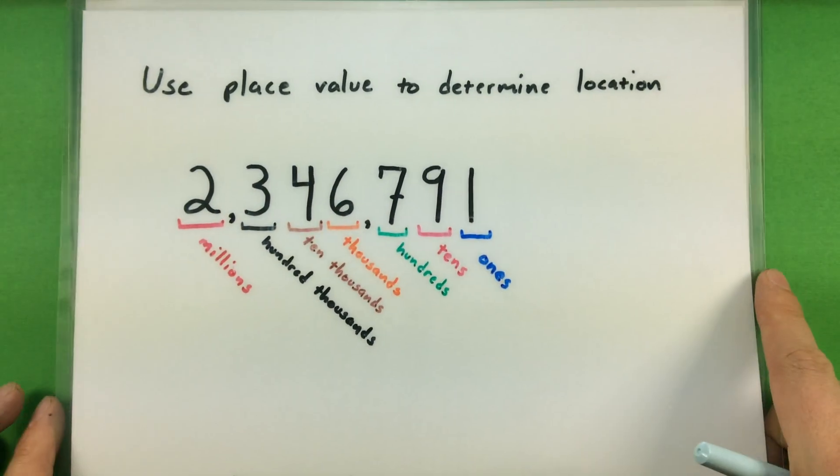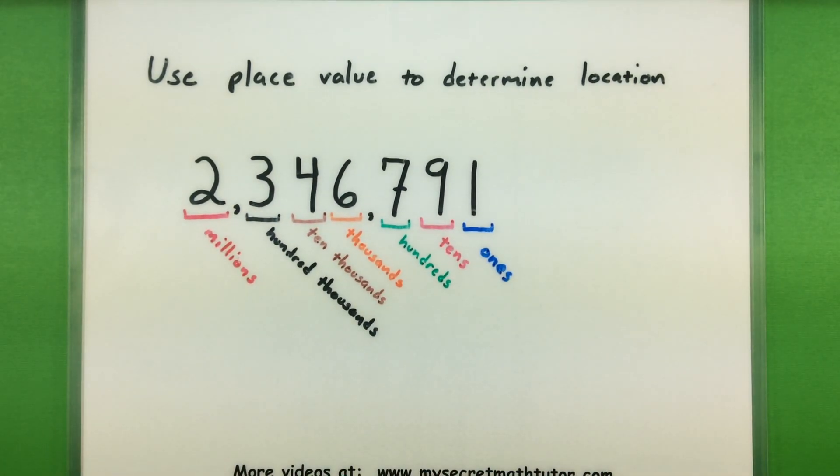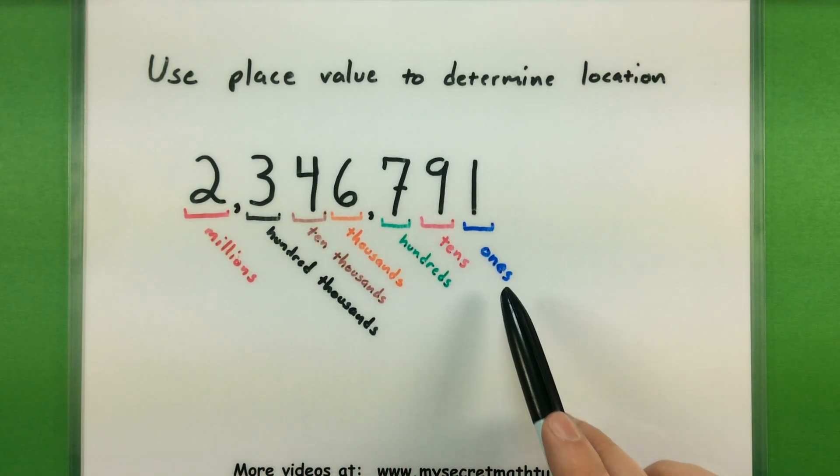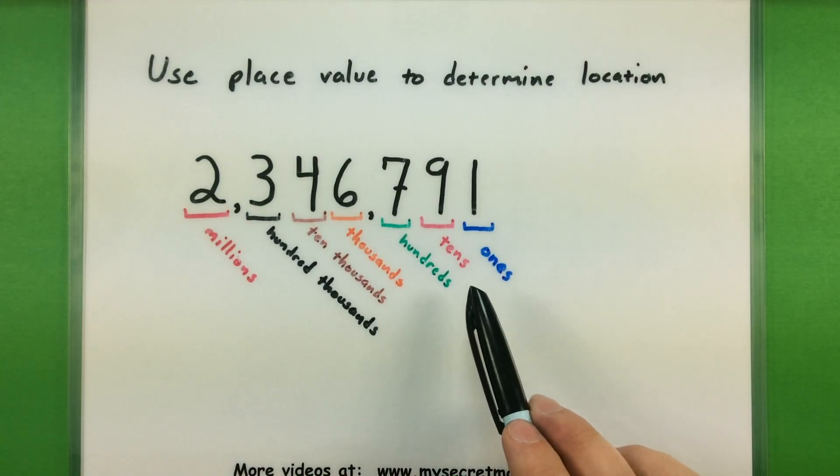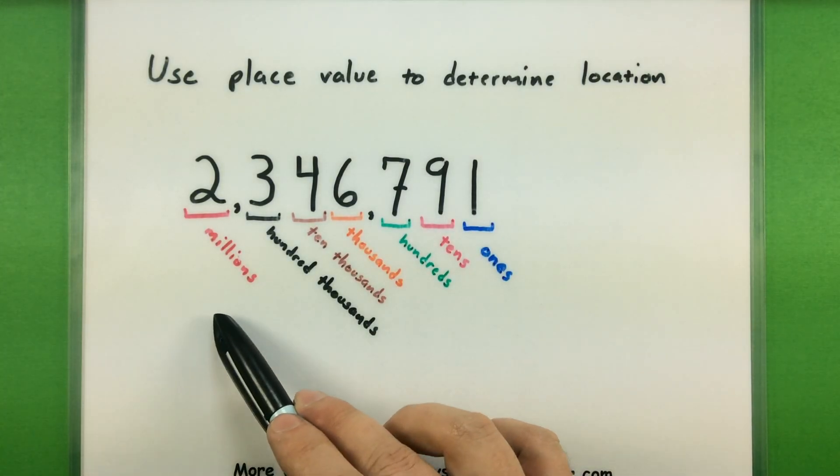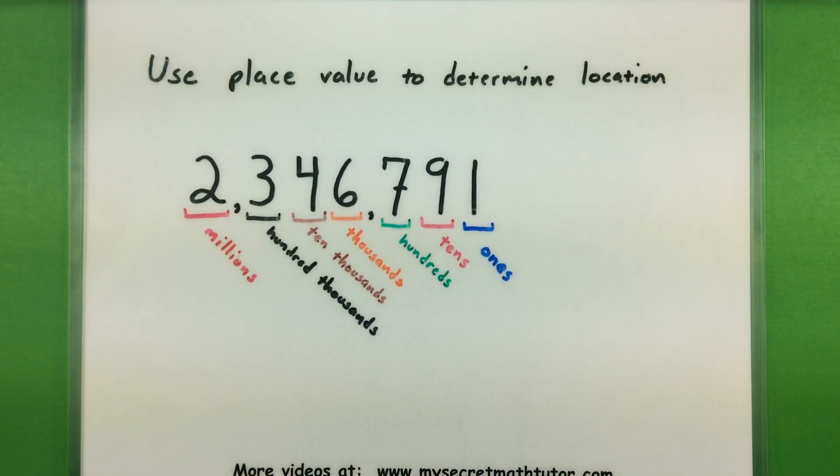The first part of this is making sure that you know your place values. Remember that a place value is really determined by where the number is located. So you have your ones, tens, hundreds, thousands, ten thousands, hundred thousands, millions, and really beyond that. That will help you identify what number you're interested in.